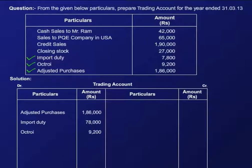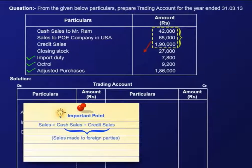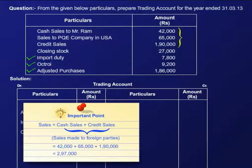Now we come to the credit side of the account. Here we have these three sales figures. Let's quickly recall the formula for sales — it is cash sales plus credit sales, and it also includes any sales made to foreign companies. So the total amount of sales, that is 2,97,000, is shown here on the credit side like this.